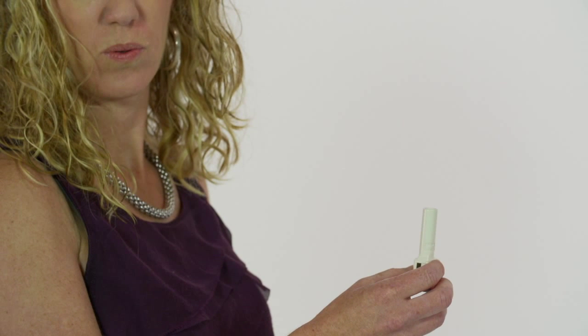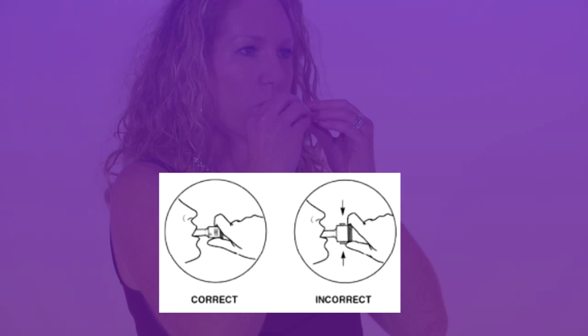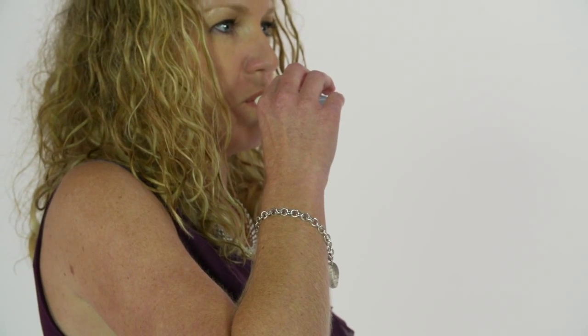Tilt head back slightly. Place the Airelyzer in your mouth between the teeth while piercing the side buttons on the left and the right, not up and down. Create a tight seal with the lips around the mouthpiece and inhale fast and deep.